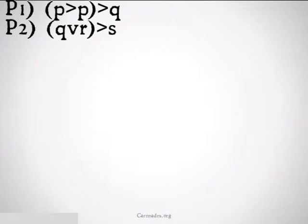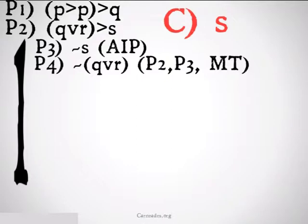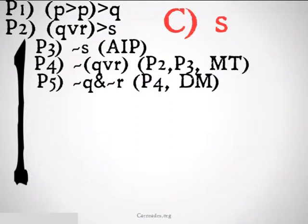Next up, premise 1: P implies P implies Q. Premise 2: Q or R implies S, and we want to conclude S. Whenever you're doing an indirect proof, you should always assume the opposite of whatever you want to conclude and see if it leads to a contradiction. So we assume not S, assumed indirect proof. Once we get not S, we can use modus tollens going backwards up premise 2 and get it's not the case that Q or R — 2, 3 modus tollens.